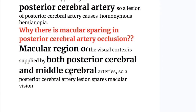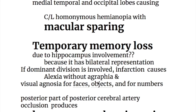Macular sparing occurs in posterior cerebral artery occlusion because the macular region of the visual cortex is supplied by both the posterior cerebral and middle cerebral artery branches. Therefore, a posterior cerebral artery lesion spares macular vision. There is also temporary memory loss in distal posterior cerebral artery occlusion due to hippocampal involvement.